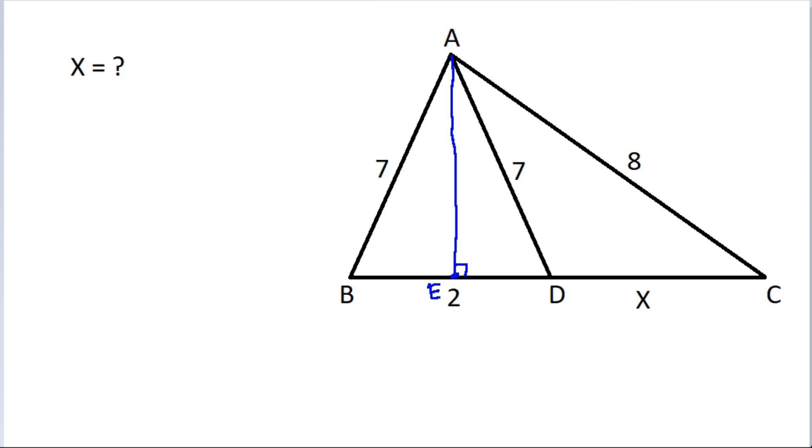then in any isosceles triangle, if these two lengths are equal, then these two lengths will also be equal. So, BE will be equal to DE, and BD is 2. So, BE will be 1 and ED will be 1.